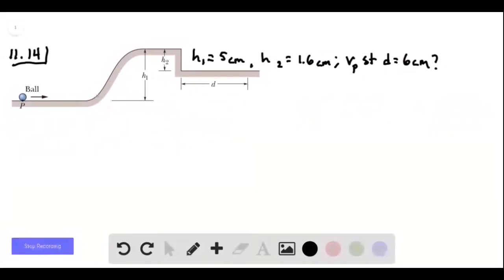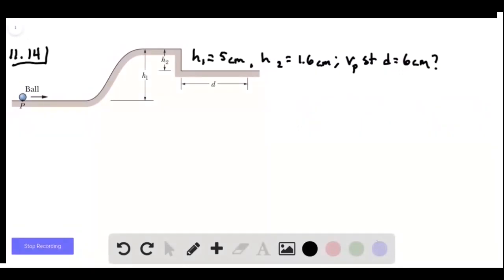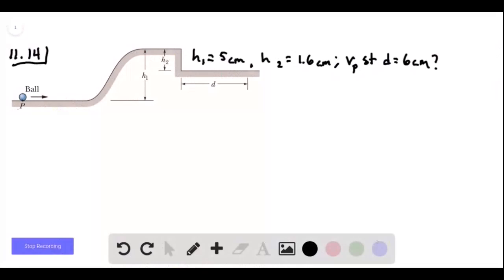We're told the heights here that these two things are. And we want to find the initial velocity this needs such that it will go six centimeters horizontally.